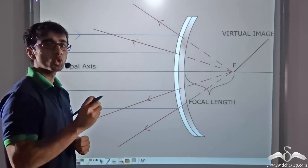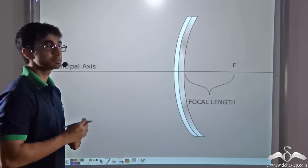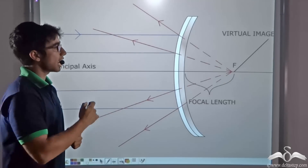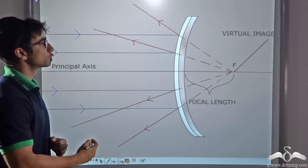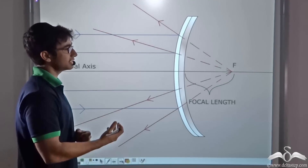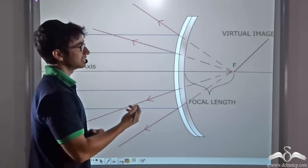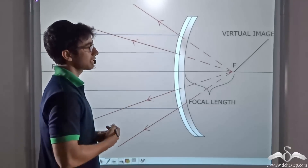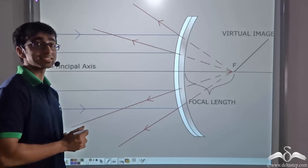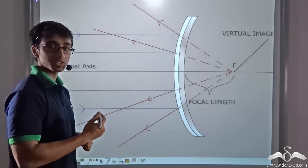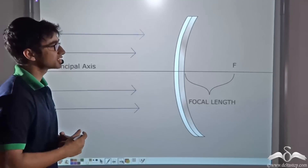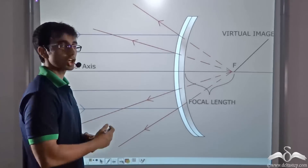That is, no image of the parallel sun rays is being formed that can be obtained in space or in the real world. However, these reflected rays that are moving outwards seem to be coming from, or diverging from, a point that lies behind the mirror. This point is the focus, and this is the point where the image of the sun rays is being formed. As this image cannot be obtained on a screen or in the real world, it is known as the virtual image of the sun rays.